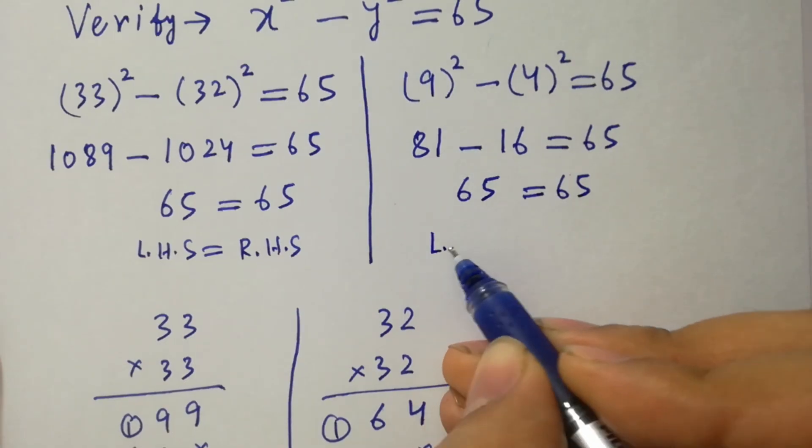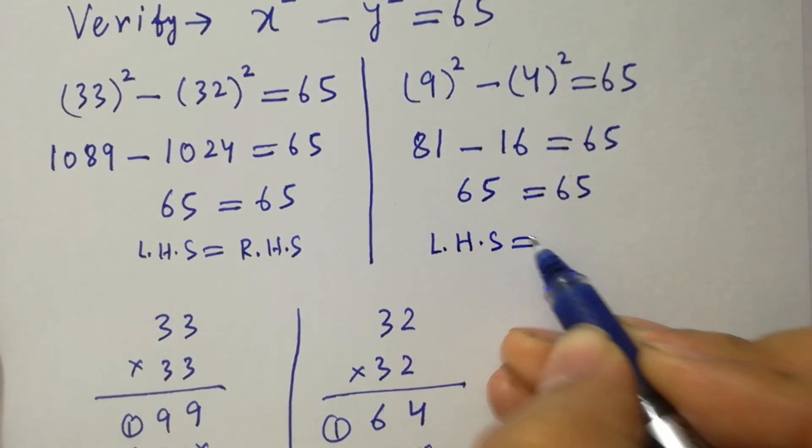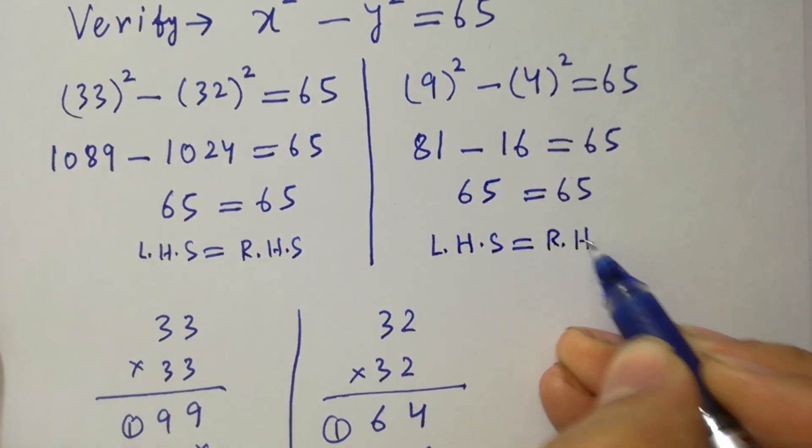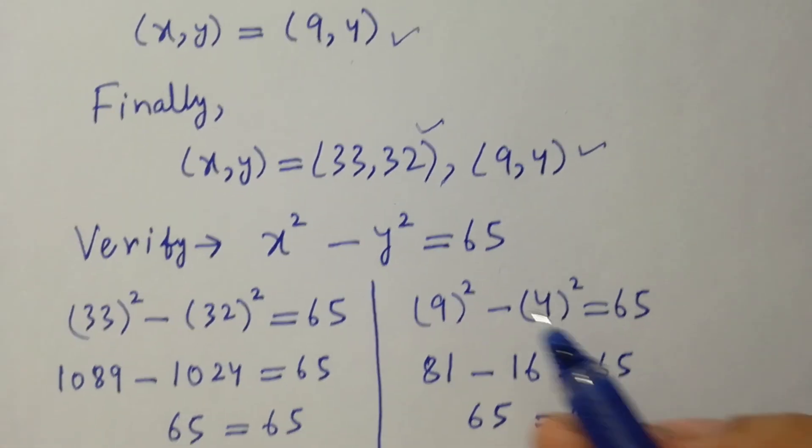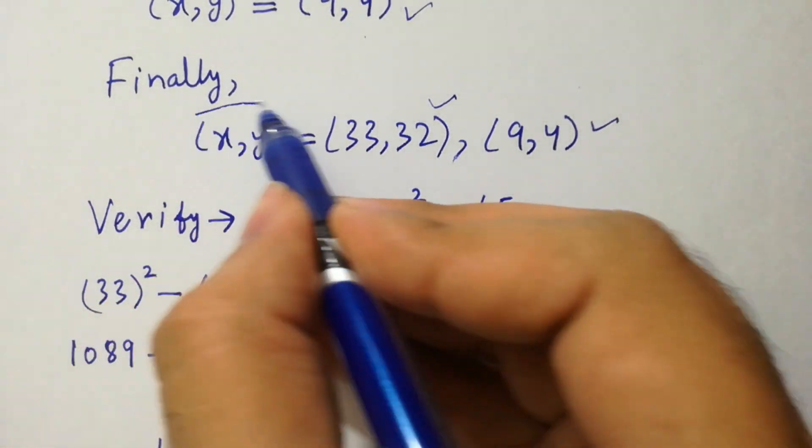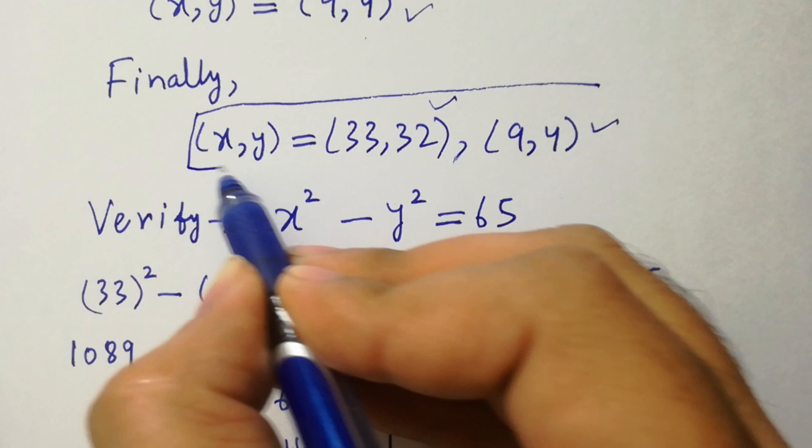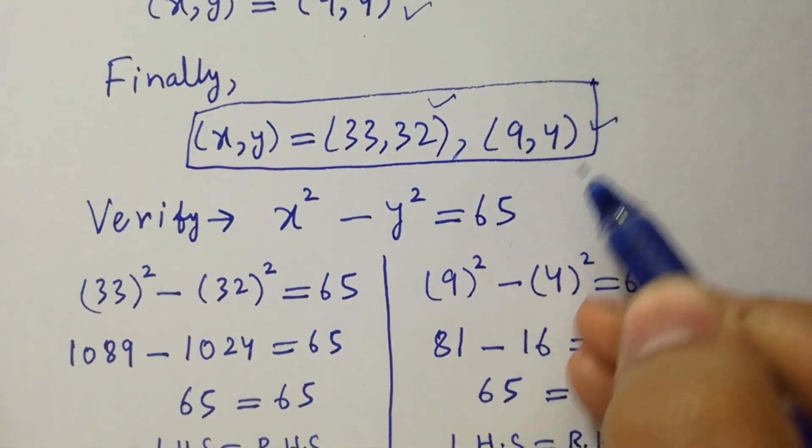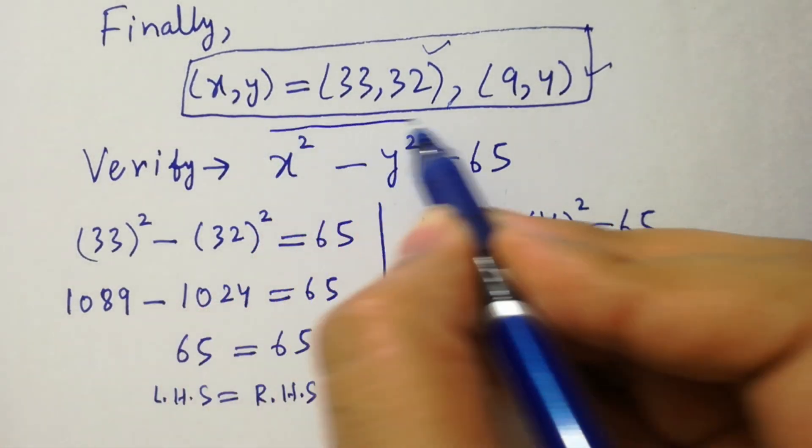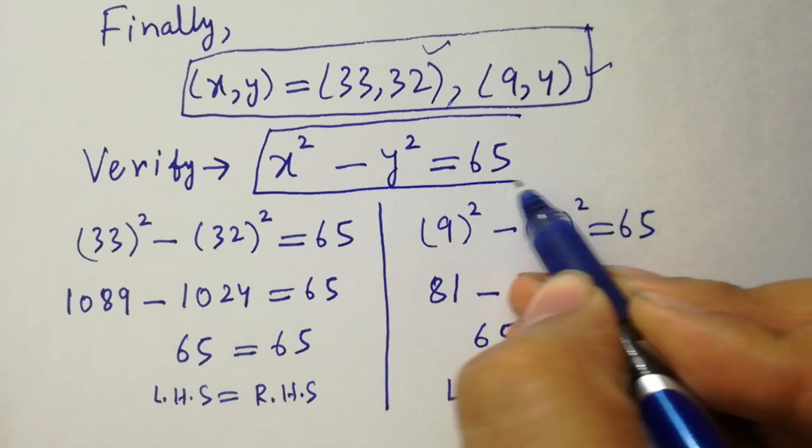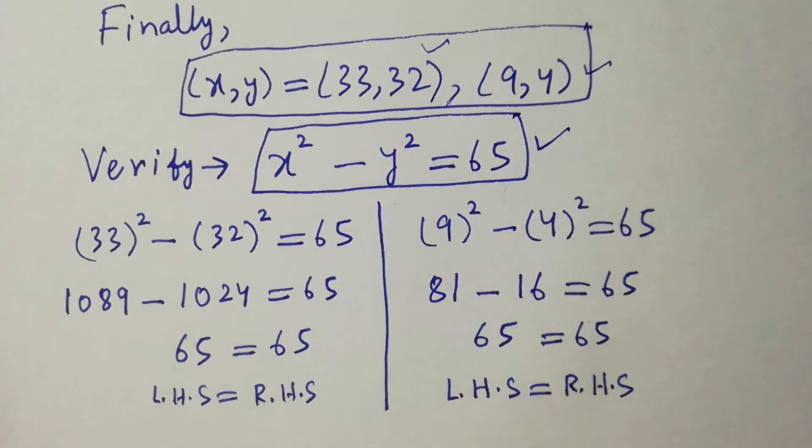Left hand side equal to right hand side, which shows that the values of x and y, 33, 32 and 9, 4 satisfies this equation of x squared minus y squared equal to 65.